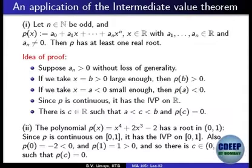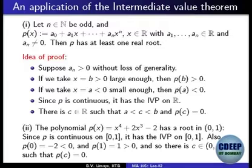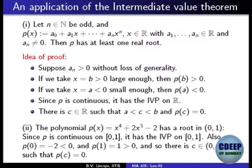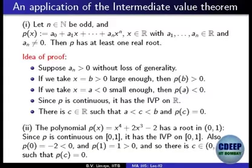The proof of this theorem is not easy, so I am going to skip it. It uses what is called the completeness of the real line, which we discussed last time. Here are one or two applications. Start with an odd integer n and look at a polynomial of degree n, where the leading coefficient a_n is not equal to 0. Then such a polynomial has to have at least one root on the real line. If you draw the graph of such a function, it has to cut the real axis at least once.